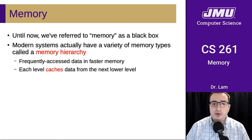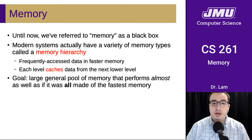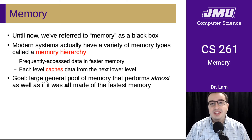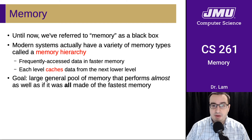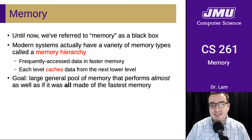Each level is going to cache data from the next lower level, which means it stores a copy of the data that's needed at any given point. The goal is so that we essentially have a large general pool of memory that performs almost as if it was all made of the fastest memory, but it's less expensive because we don't actually have to build it all out of the fastest memory. It turns out the fastest memory is, of course, the most expensive kind to manufacture.